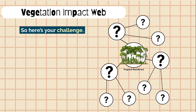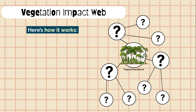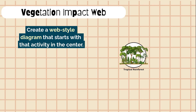So here's your challenge. You're going to create an impact web that shows the many different causes and effects of changes to natural vegetation. Choose one vegetation region to focus on — for example, tropical rainforest, grassland, boreal forest, or tundra — and create a web-style diagram that starts with that region in the center.